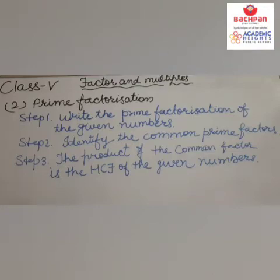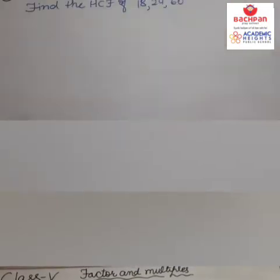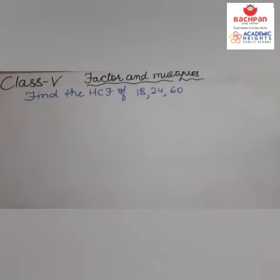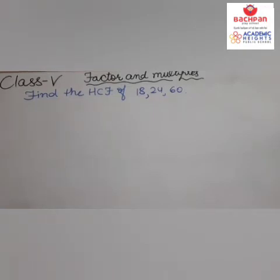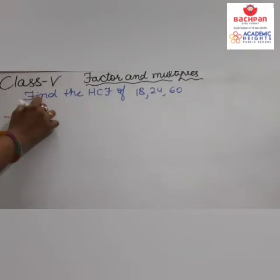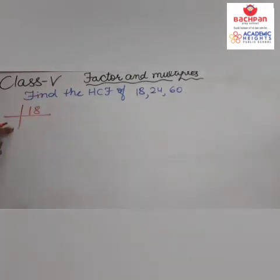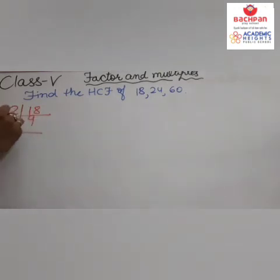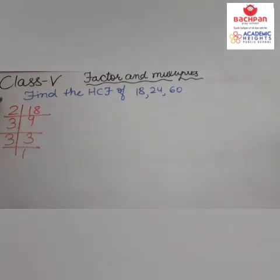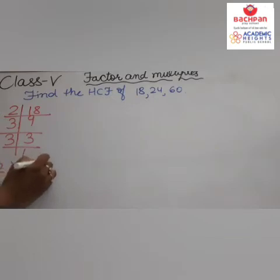Let's understand this with an example. Find the HCF of 18, 24, and 60. First, the prime factorization of 18: the smallest prime is 2. 2 times 9 is 18. Then 9 comes in the table of 3: 3 times 3 is 9. So 18 equals 2 times 3 times 3.